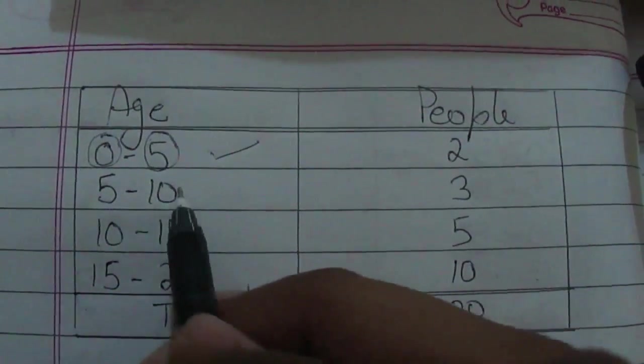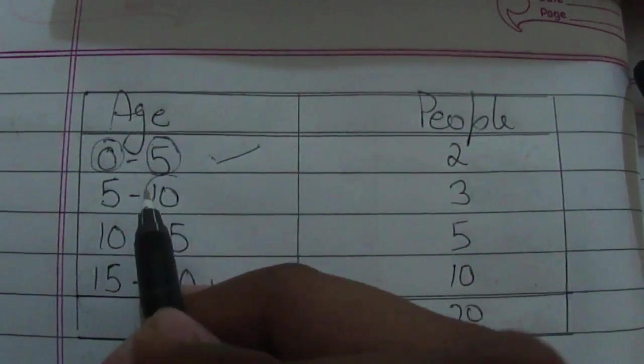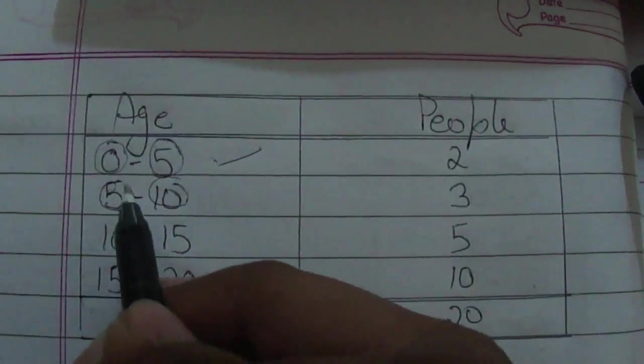Similarly, in the class 5 to 10, 10 would be its upper limit and 5 would be its lower limit. Hence, we have completed our first topic.